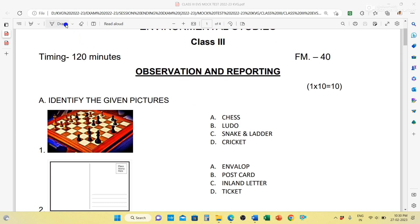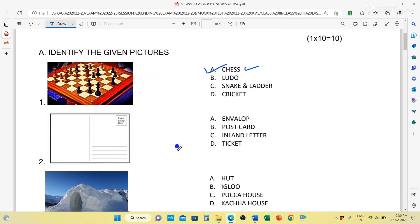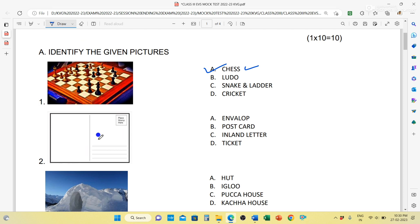Identify the given pictures. First one is the picture of chess, ludo, snake and ladder, cricket. You can see here this is the picture of chess, so option A is the correct answer. Next is the picture of envelope, postcard, inland letter, ticket. It is your postcard.